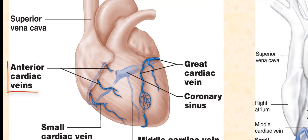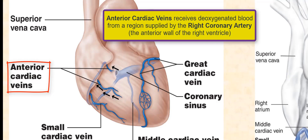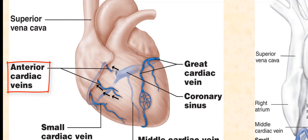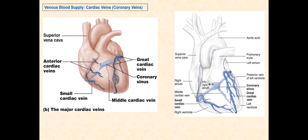The anterior cardiac veins consist of three to four veins found on the anterior surface of the right ventricle. They receive blood from the anterior wall of the right ventricle, a region supplied by the right coronary artery. These veins directly drain deoxygenated blood into the right atrium, bypassing the coronary sinus. However, in some individuals, they may converge with the small cardiac vein, as shown in this diagram.